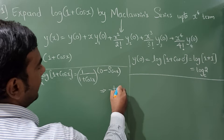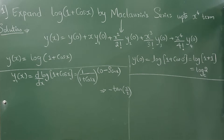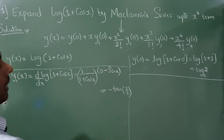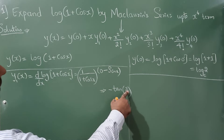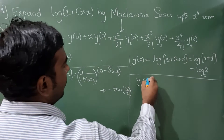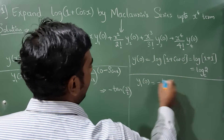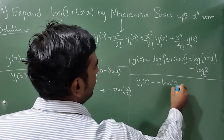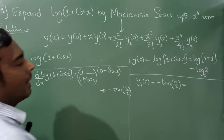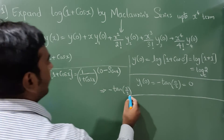Using the half-angle formula, −sin x / (1 + cos x) simplifies to −tan(x/2). Substituting x = 0: y₁(0) = −tan(0/2) = −tan(0) = 0. So y₁(0) = 0.